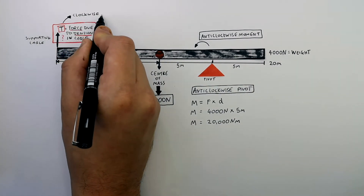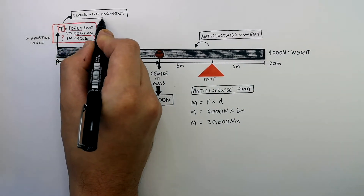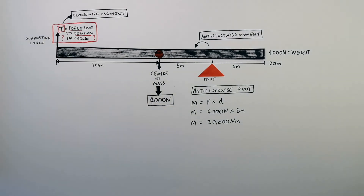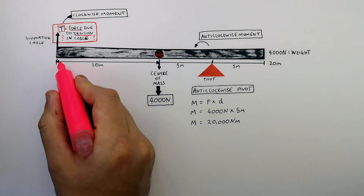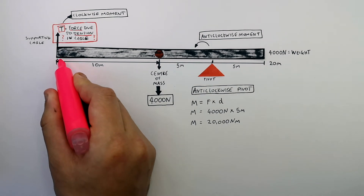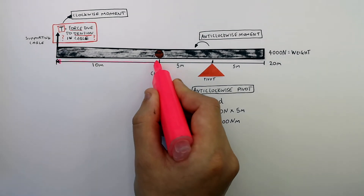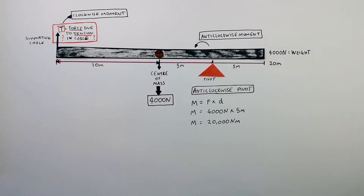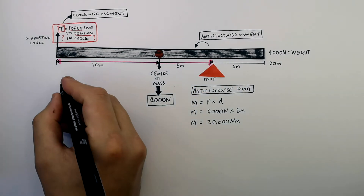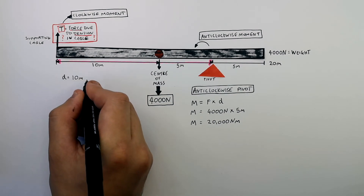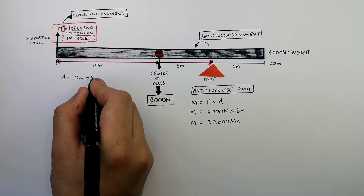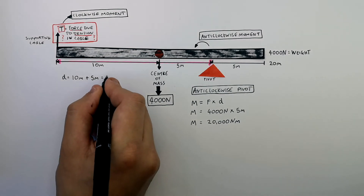Now for the clockwise moment. What is D, the perpendicular distance from the line of action of the force to the pivot? The distance from the supporting cable to the pivot is 15 metres — it's 10 metres from the supporting cable to the centre of the mass, plus the additional 5 metres from the centre of the mass to the pivot.